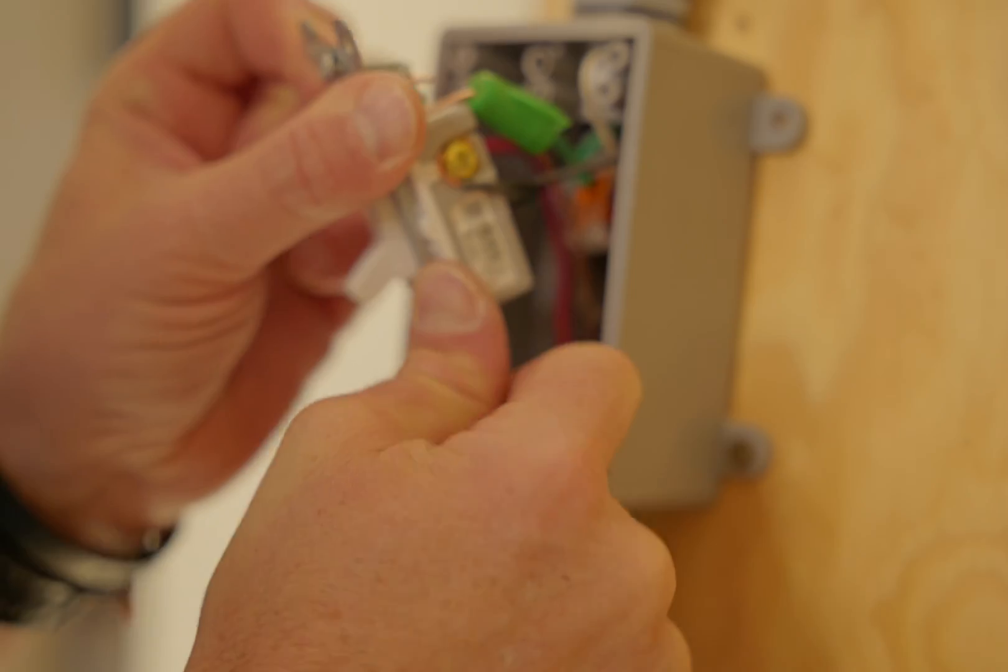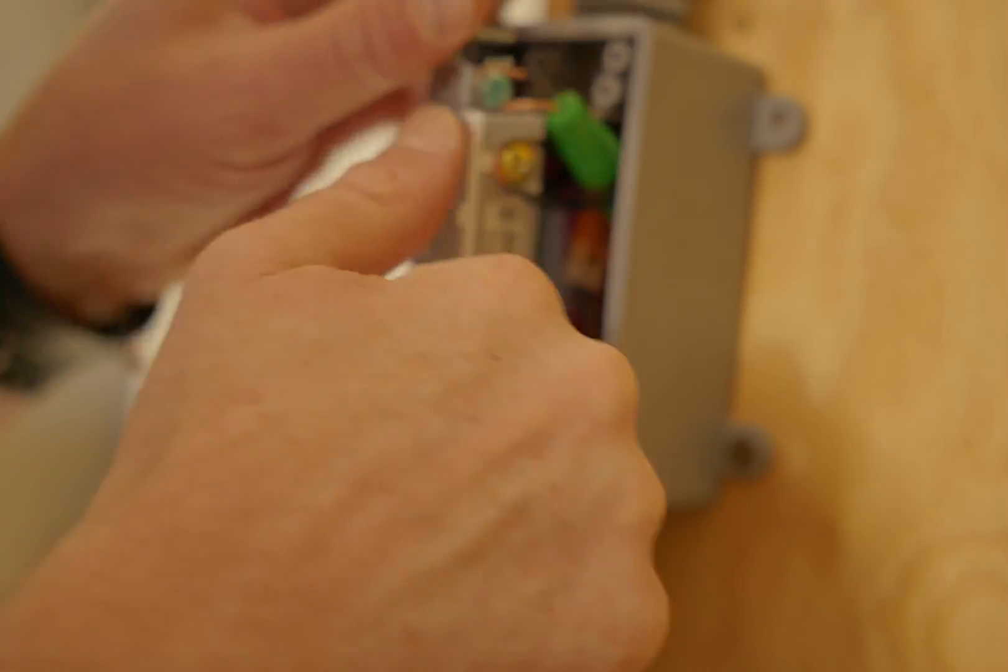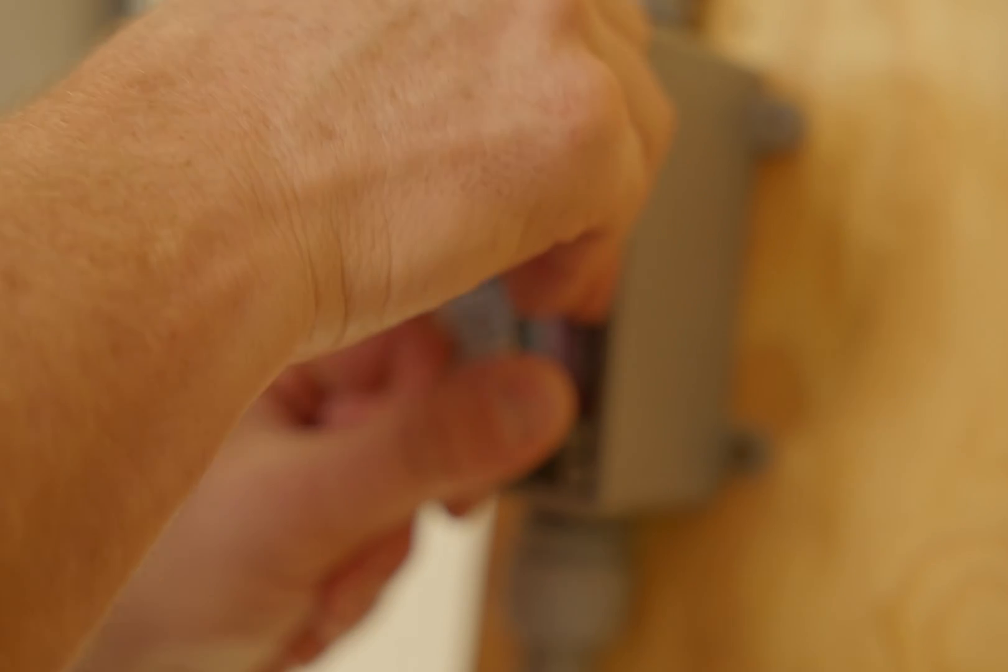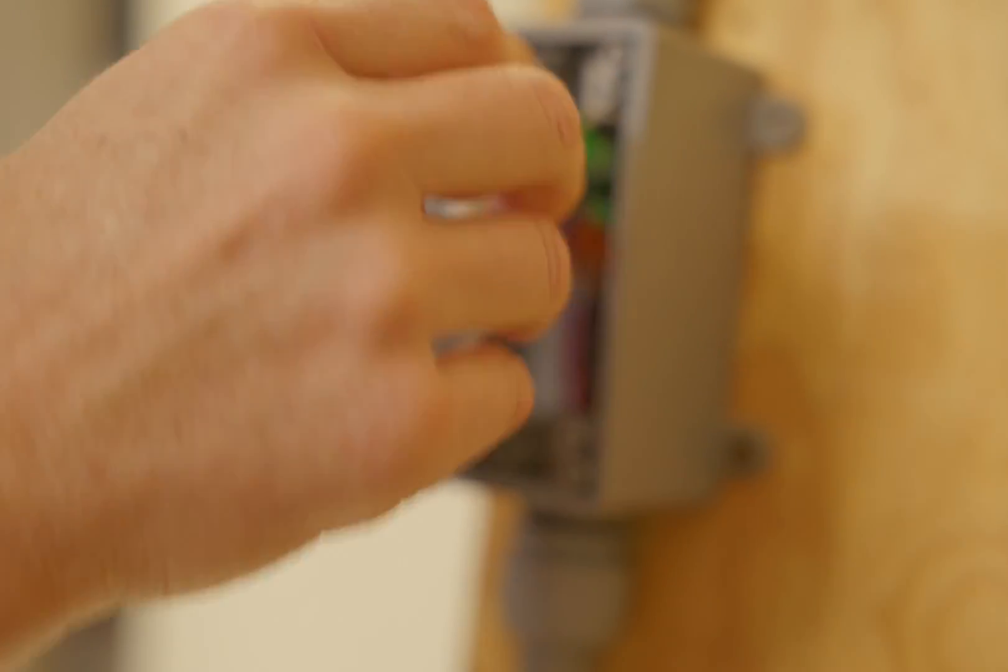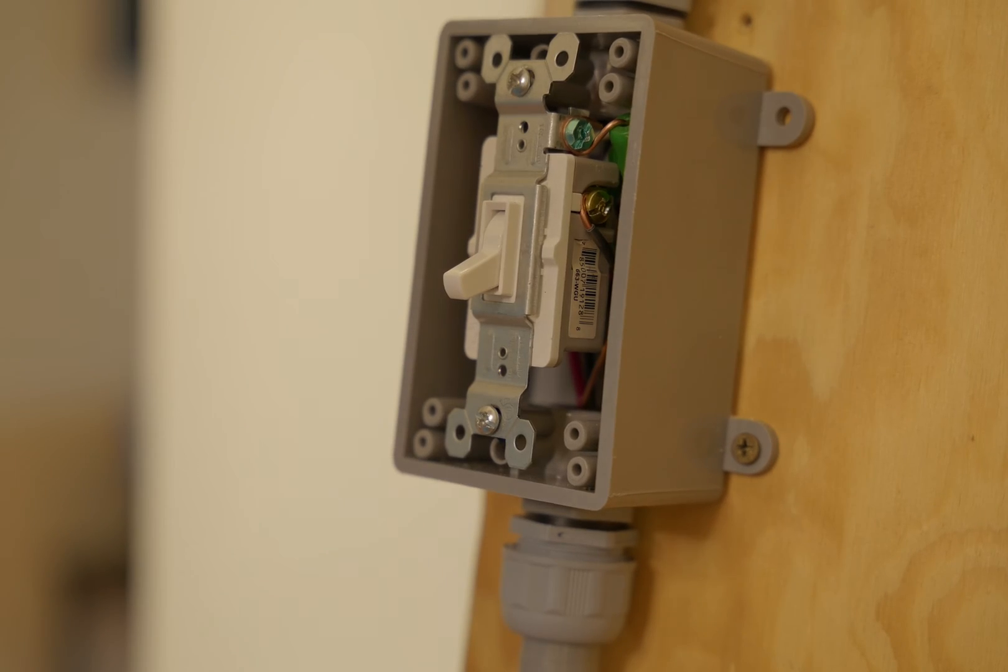So the last thing to do is check our connections, make sure everything's tight, not touching. You're going to want to gently push your wiring back in. And then we can fasten it down. Okay, now that we've got our first switch installed, it's time to move over to the second switch.